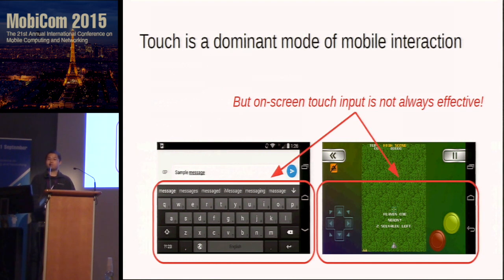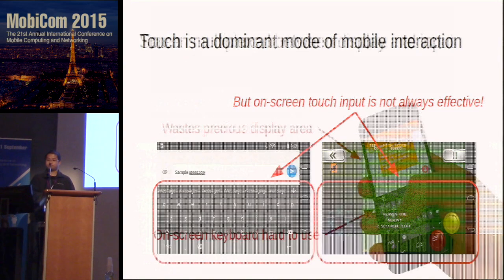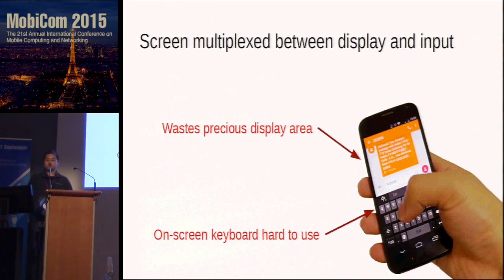Currently, touch is a dominant mode of mobile interaction. However, as you probably already noticed, it is not always very effective. The input controls can take a large area on the screen, and yet it is still very hard to use. There are several reasons behind this problem. First of all, the screen is multiplexed between display and input, which means that input will waste precious display area.